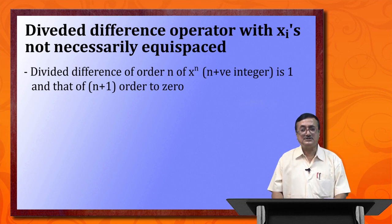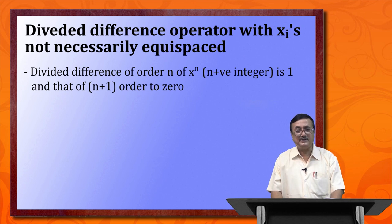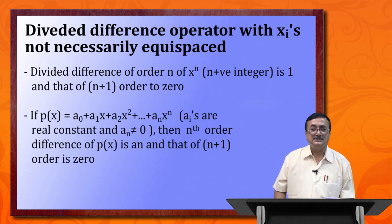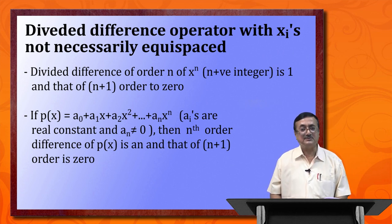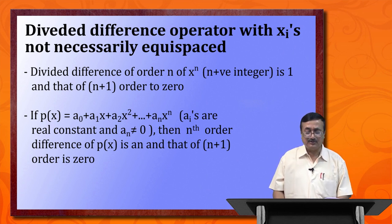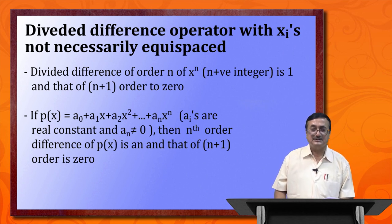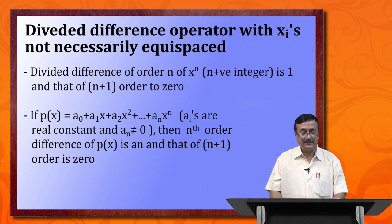The divided difference of order n of a function x^n, where n is a positive integer, is 1. The (n+1)th-order divided difference of x^n is 0. If we have an nth-order polynomial p(x) = a0 + a1*x + a2*x² + ... + a_n*x^n, where a_n ≠ 0, then the nth-order divided difference of p(x) equals the constant a_n, and the (n+1)th-order divided difference of p(x) equals 0.